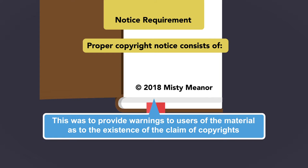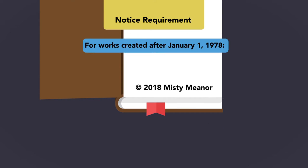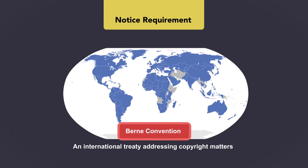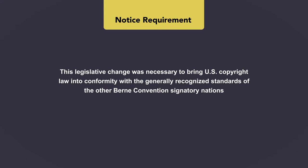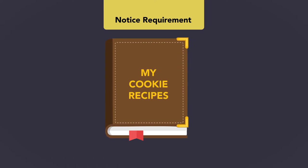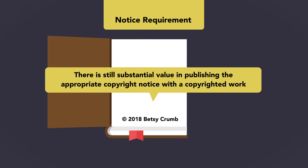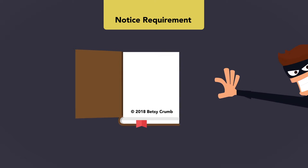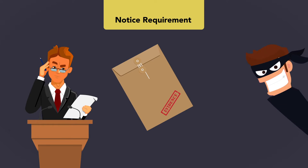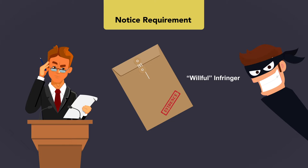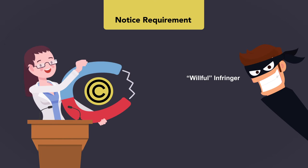This was to provide warnings to users of the material as to the existence of the copyright claim. For works created after January 1, 1978, the mandatory notice requirement was dispensed with, effective March 1, 1989, when the United States joined the Berne Convention, an international treaty addressing copyright matters. One of the modifications required was the elimination of the mandatory copyright notice requirement, to bring U.S. copyright law into conformity with the standards of the other Berne Convention signatory nations. Though formal notice is no longer necessary, there is still substantial value in publishing the appropriate copyright notice. Notice is viewed as an indication that any potential infringer should be aware the material is claimed as copyrighted, and can be used in infringement litigation as evidence of willful infringement, helping a copyright owner recover more significant damages.